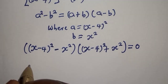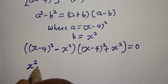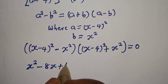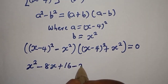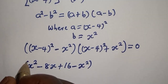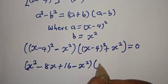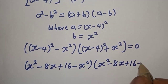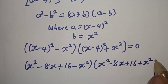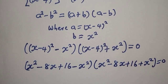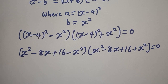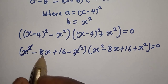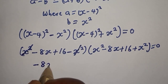Now, s minus 4 squared is s squared minus 8s plus 16. So the first factor becomes s squared minus 8s plus 16 minus s squared, and the s squared terms cancel, leaving minus 8s plus 16.